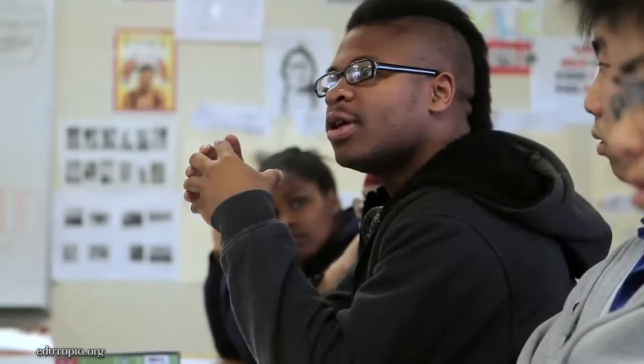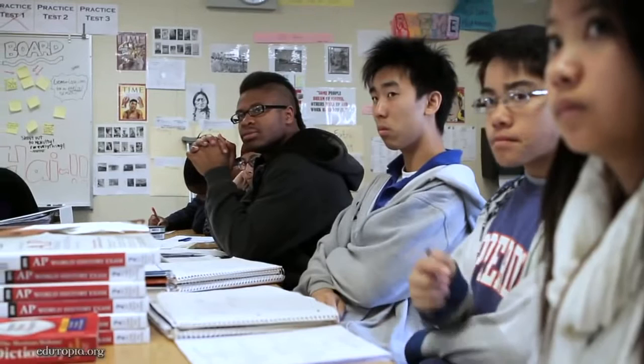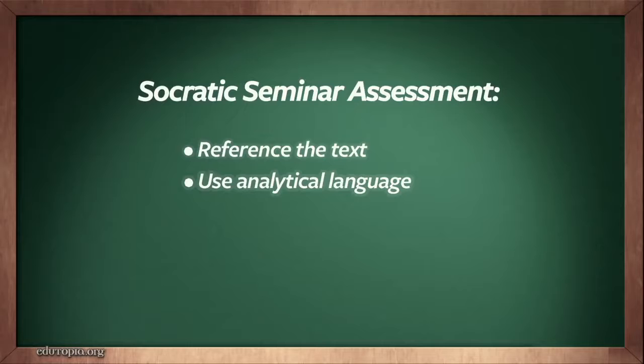Many teachers know this as a fishbowl. The rubric asks the person on the outer circle to grade: did they use the text to support their arguments, did they use analytical language, did they make a connection to what someone else was saying, did they agree or disagree with someone else. It's really important that you seat them in a way that's conducive, and you sit down yourself or even take yourself out of the discussion — if you're just standing up there normally, they might not be able to have the discussion you want.